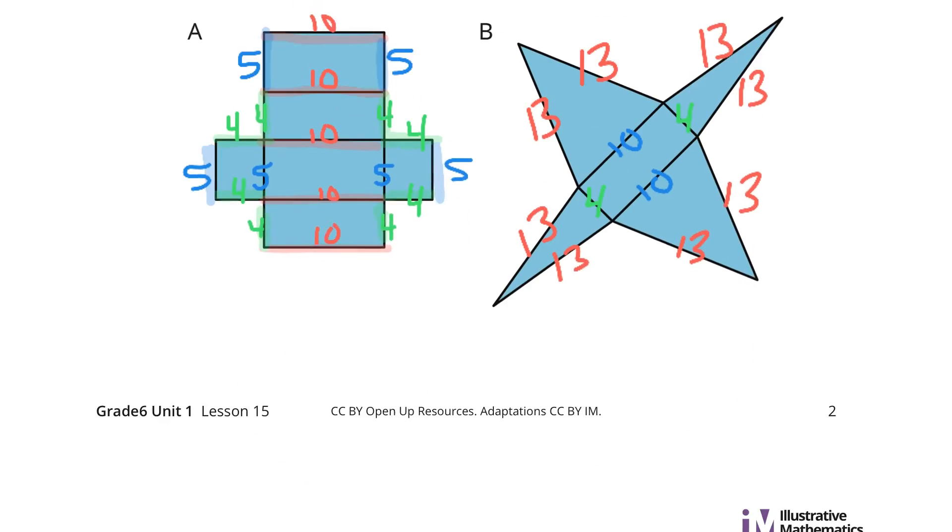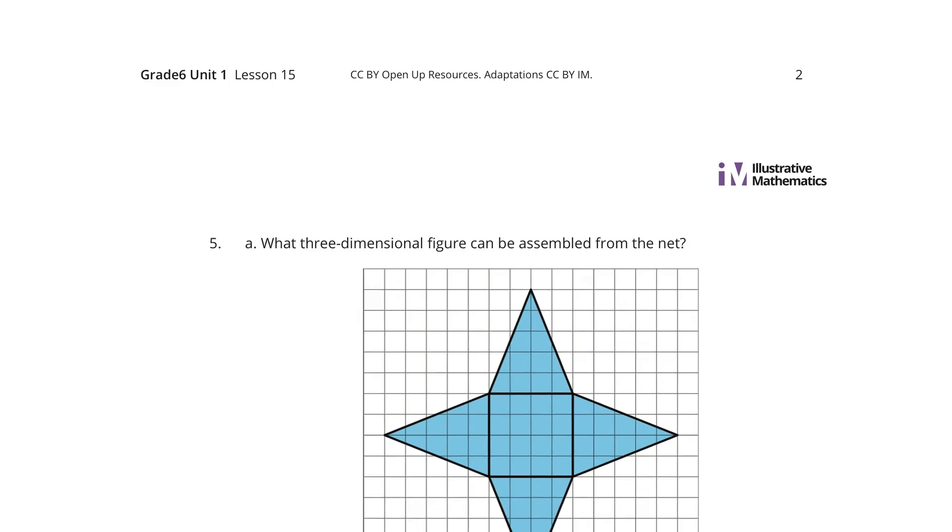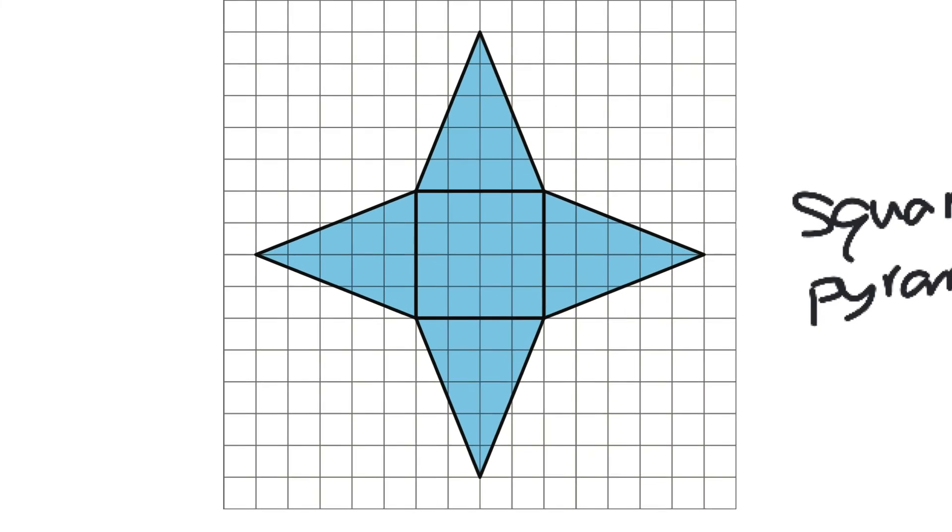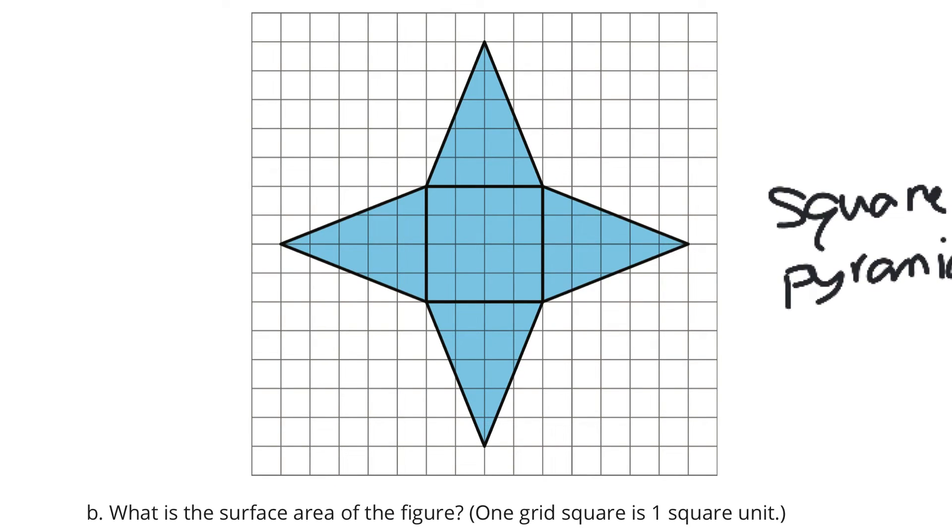Continuing on to question 5. What three-dimensional figure can be assembled from this net? Well, I only have one base and it's a square. So, I would think that this is a square pyramid. And as I look to find the surface area of this figure with one grid square being one square unit, labeling my sides here 4, 4, 4, and 4. And all these triangles are going to be identical, which is really nice.